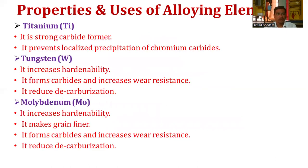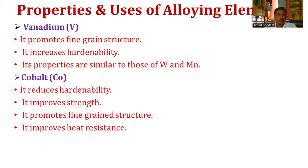Titanium is a strong carbide former that prevents localized precipitation of chromium carbide. Tungsten (W) increases hardenability, forms carbides to increase wear resistance, and reduces decarburization. Molybdenum (Mo) increases hardenability, makes the grain finer, forms carbides to influence wear resistance, and also reduces decarburization.